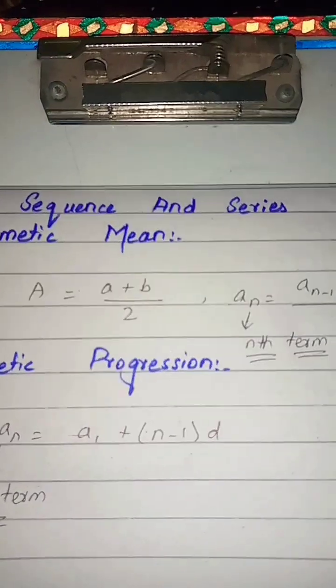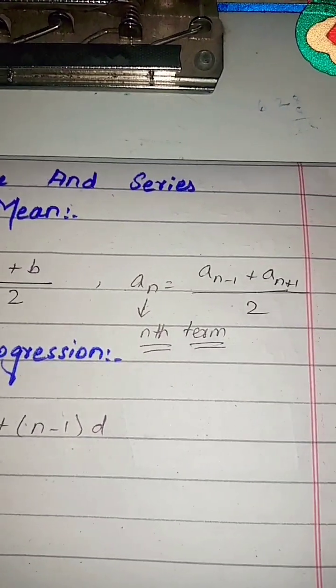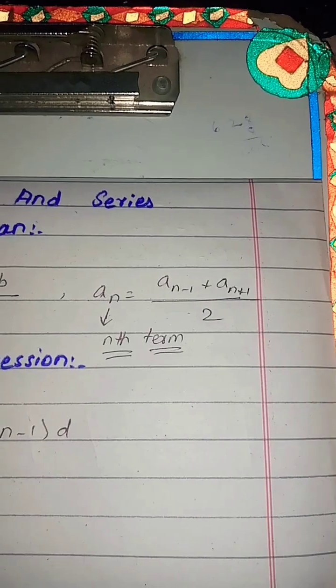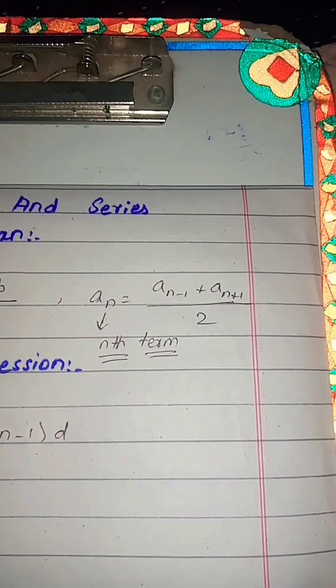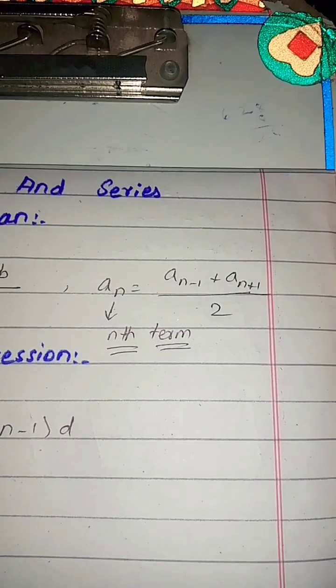For nth terms, the formula of arithmetic mean is an = (an-1 + an+1)/2. This is also the average, or we can say it is the mean.